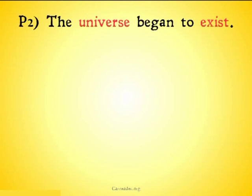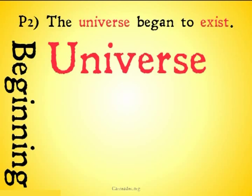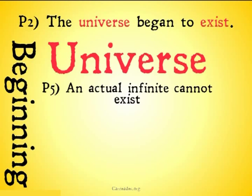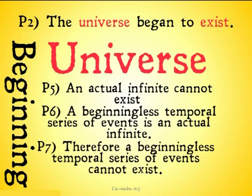So, if you don't remember, premise two is the universe began to exist, and Craig gives us a defense of this premise. He says an actual infinite cannot exist, a beginningless temporal series of events is an actual infinite, therefore a beginningless temporal series of events cannot exist. Because premise seven just follows logically from premises five and six, we're going to take a look just at how to object to premises five and six, because we're not doubting logic, at least in this video.